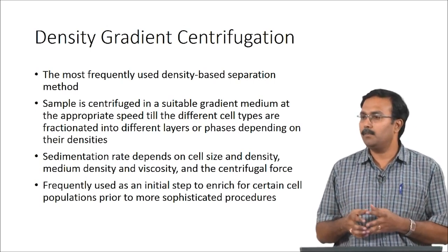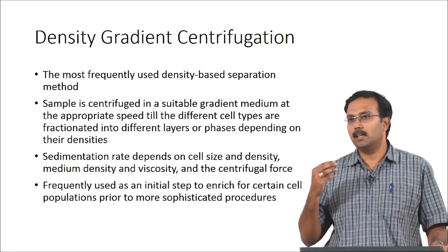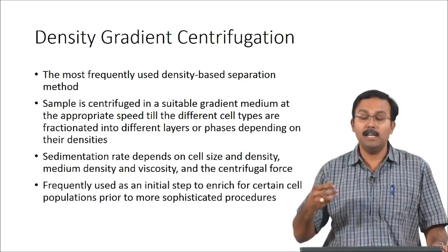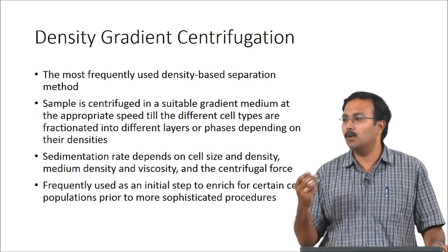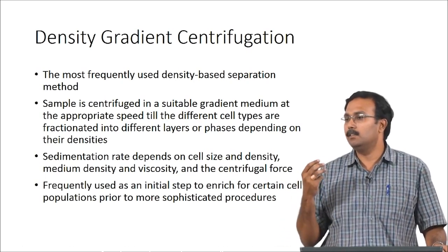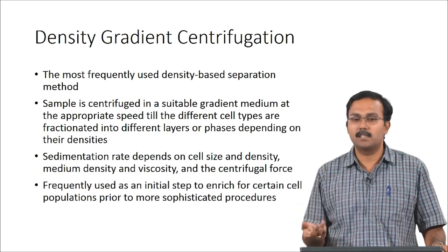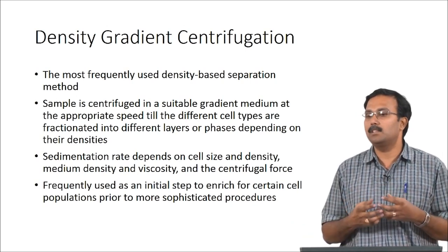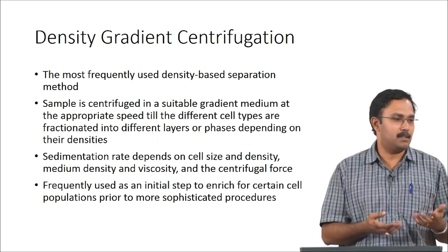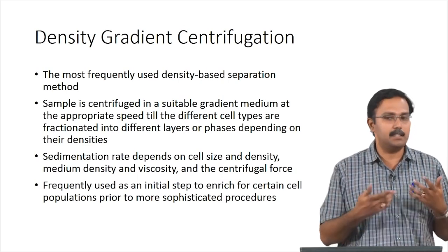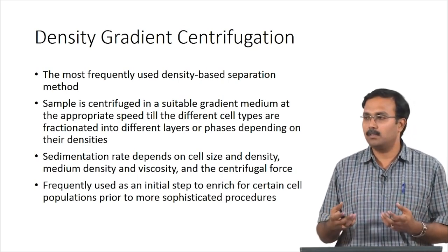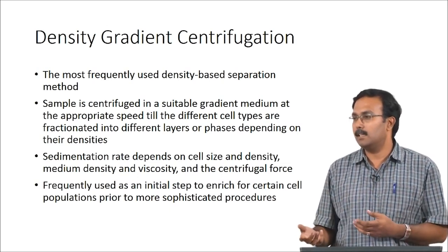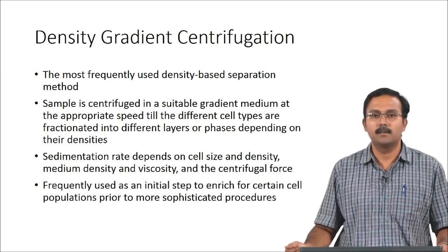With respect to centrifugation, the speed used will have a significant role in how cells are isolated because cells experience a lot of shear stress at high centrifugation speeds. That is one reason this is used for separating cells in peripheral blood which can withstand the shear rates. If you have a cell population which cannot withstand the shear rates, you would not want to use centrifugation.